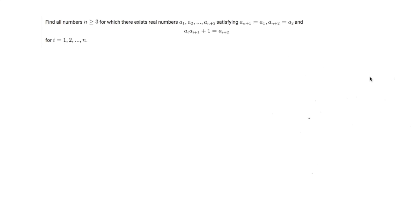Let me start reading the problem. We want to find all numbers n larger than 3 such that there exists real numbers a_1, a_2, until a_n satisfying that the product of a_i and a_{i+1} plus 1 equals a_{i+2}. In particular, by definition we have a_{n+1} is a_1 and a_{n+2} is a_2.